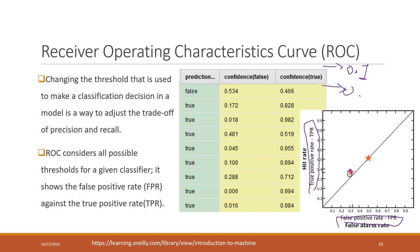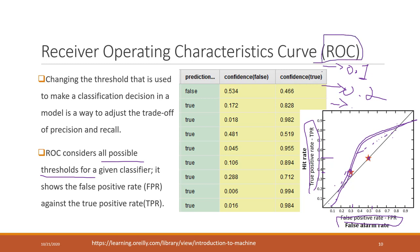Next, we choose another threshold, say 0.2, and calculate the corresponding true positive and false positive values, marking another point. We keep continuing, trying out all possible thresholds. The calculation is very intensive. Once we have all the points, we connect them together to form the ROC curve.